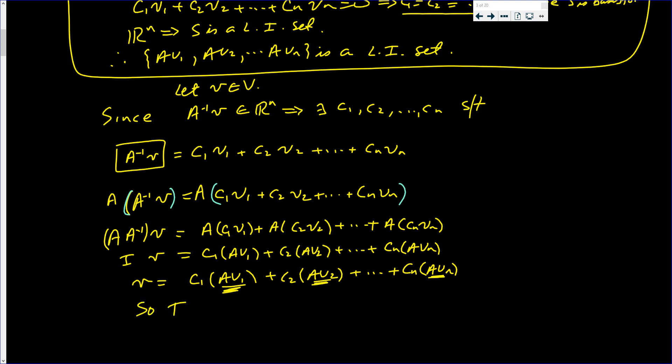So, I was able to write V as a linear combination of the vectors in T. So, T equals {Av1, Av2, ..., Avn} spans R^n.